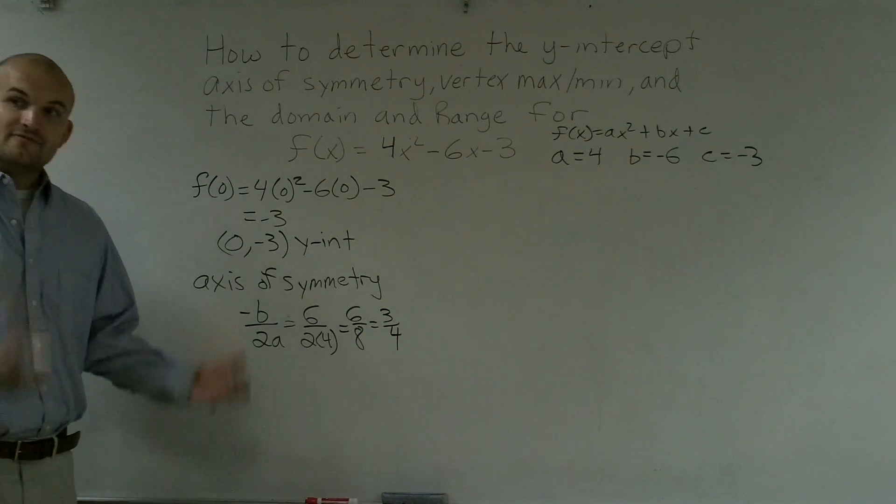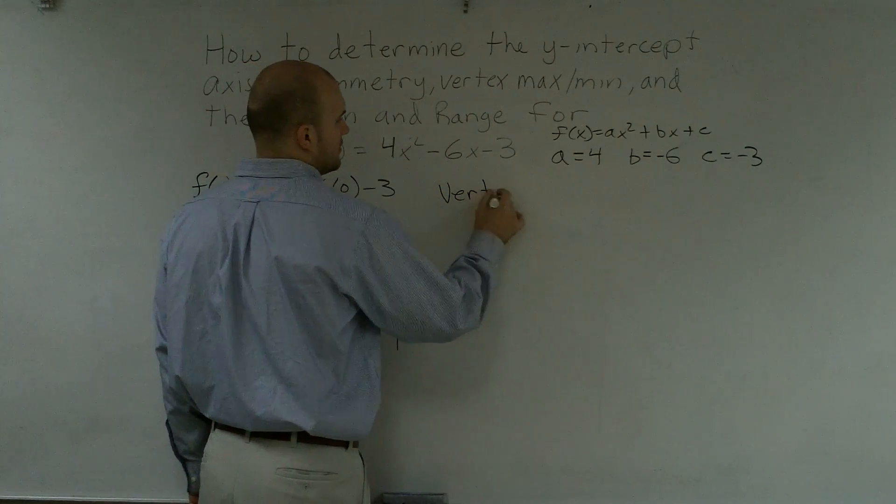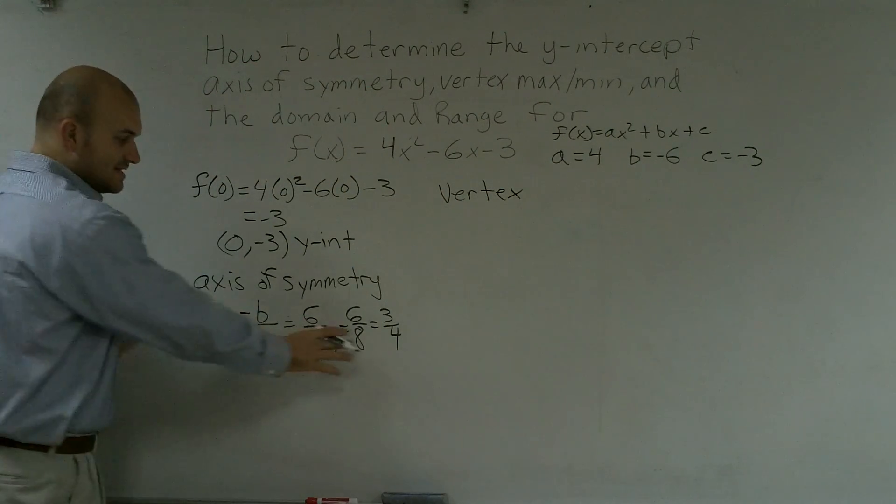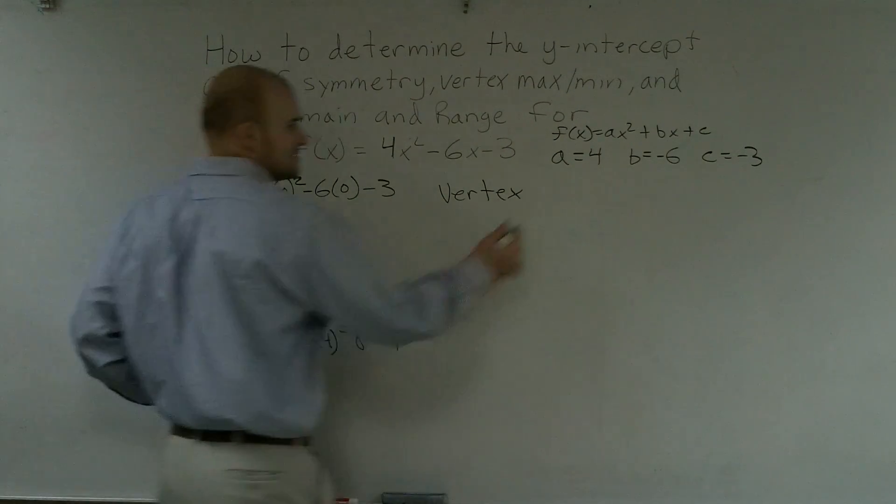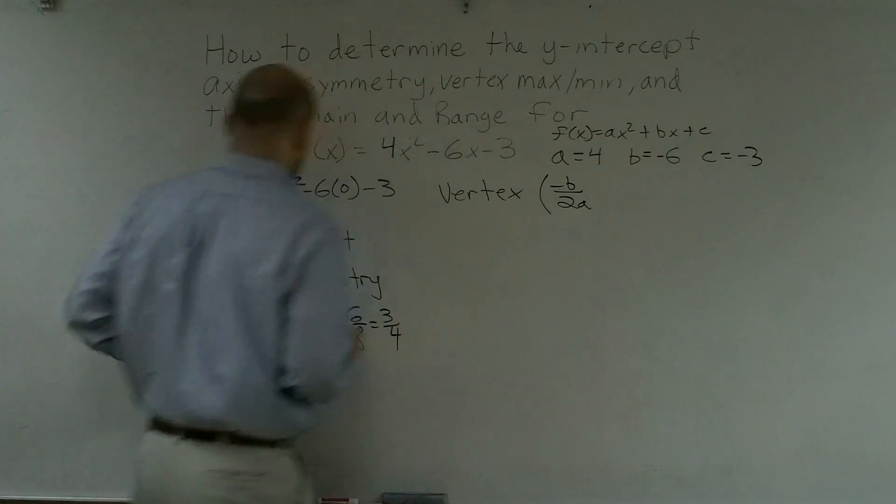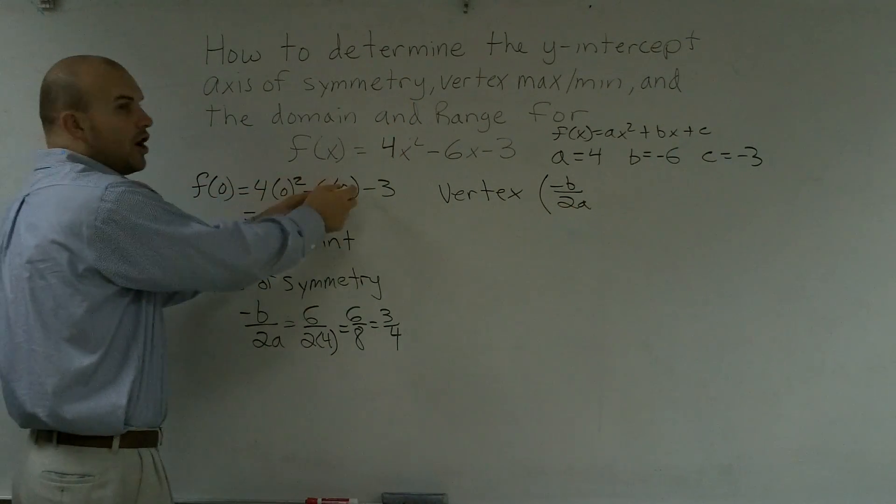Now, to find the vertex, the vertex lies on the axis of symmetry. So if this is the x value, so really this is actually the x value of your vertex, so therefore it's -b over 2a. And then just like what I have here,